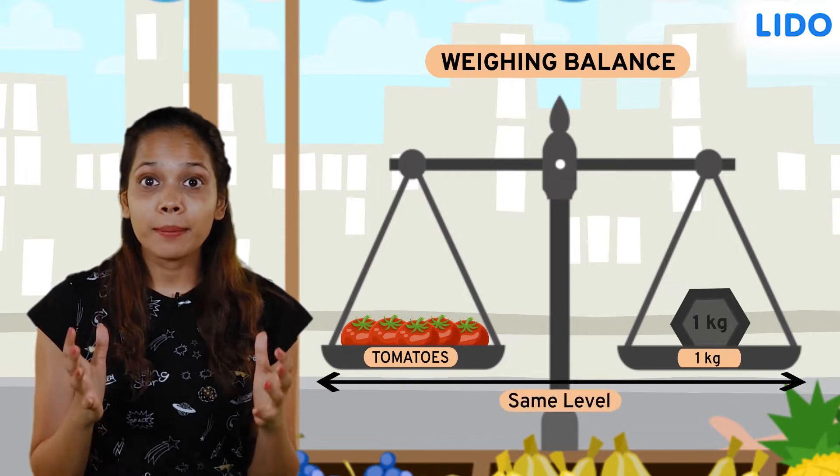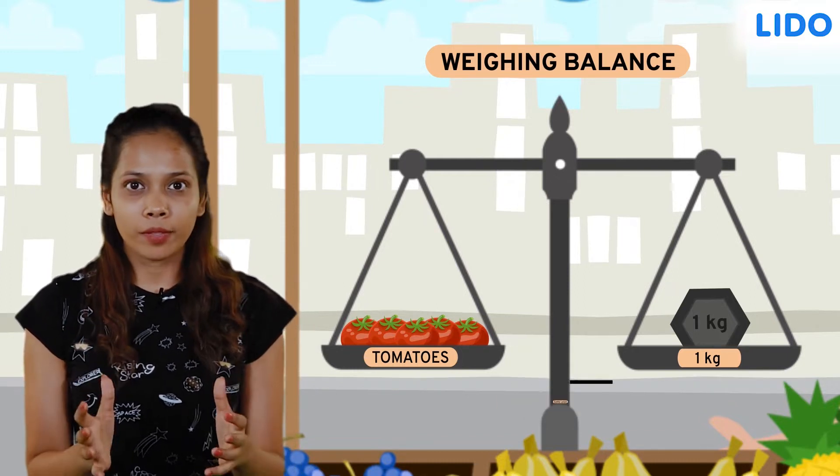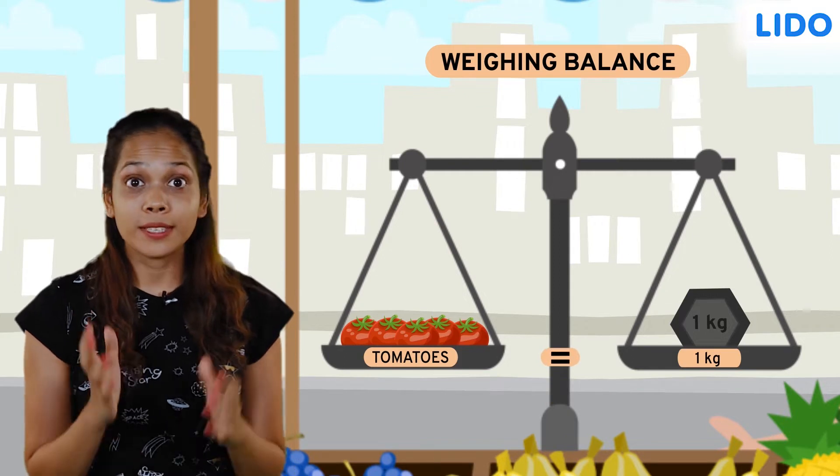Since both the pans are at the same level, it means that both sides weigh the same. So the weight of these tomatoes is 1 kg.